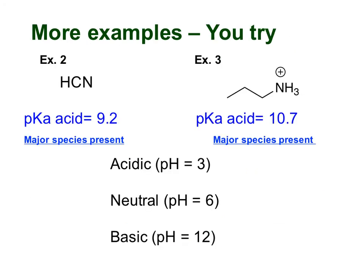So as with anything, one example is not going to be enough for you to totally understand it, so let's try a few more together. First, let's do example two, this HCN. We've got the pKa of the acid at 9.2, and we're going to try to figure out what's the major species present at each of these different pHs, acidic pH 3, neutral pH 6, basic pH 12. What's the first thing that we're going to need to do for this one? Well, we definitely want to draw the conjugate base because that's the other form we could have. So looking at HCN, what would be the conjugate base of that molecule? Pause the video and write it now.